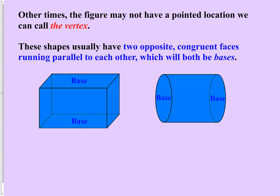If you do not have a position in your figure that can be called the vertex — meaning the figure does not taper away into a single point — then chances are you are looking at a figure that has two bases rather than one base. You can confirm this by looking at the nature of those two bases: they will always be across from each other, parallel to each other, and congruent to each other.